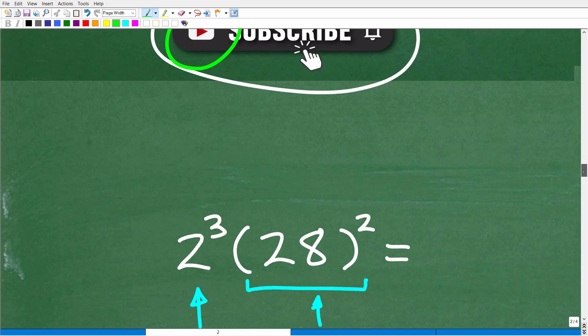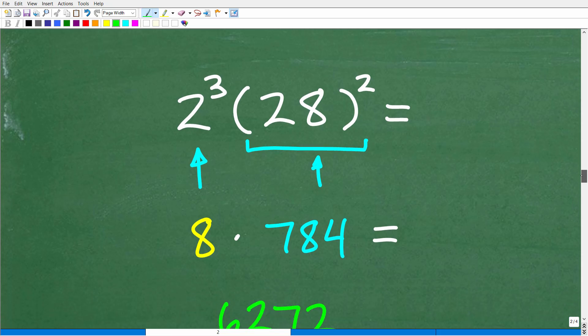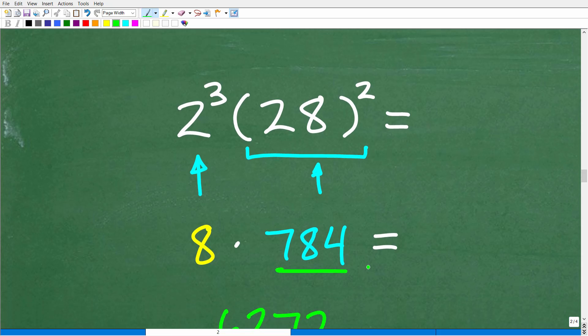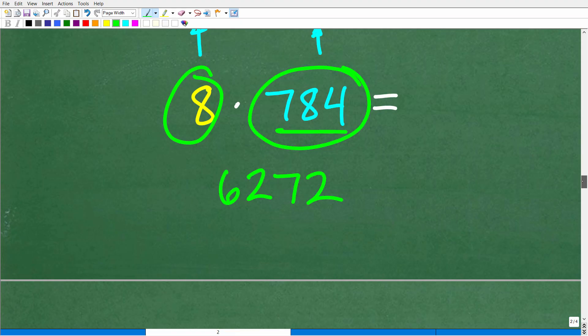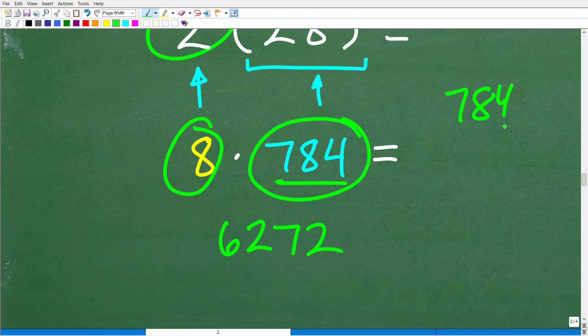But let's go ahead and finish up this problem so we know what 28 squared is. That's 28 times 28. So that's 784. And now we have to take care of the power part of this problem. Okay. So we need to evaluate 2 to the third power. That is what? Well, that is 8. And so now we have 8 times 784. And again, we're back to doing some old school arithmetic.